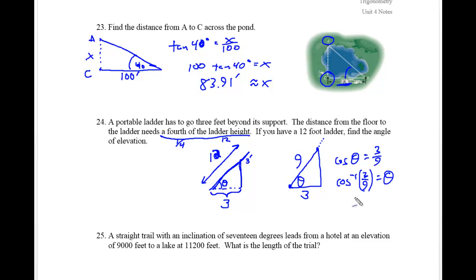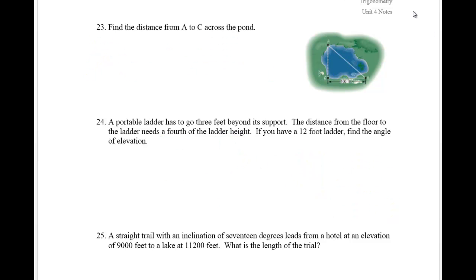And the inverse cosine of one third is going to be approximately 70.53 degrees. So that's my theta. So it's a pretty big angle and you should probably know to put your ladders closer to the wall rather than further away. And again, that's according to OSHA's rules and regulations here.